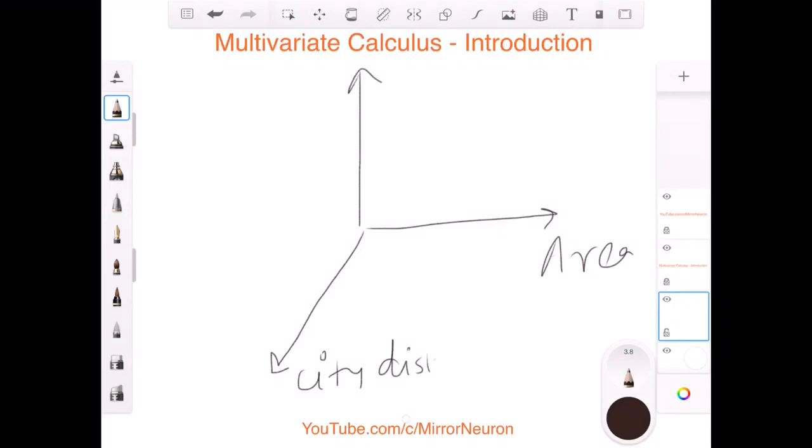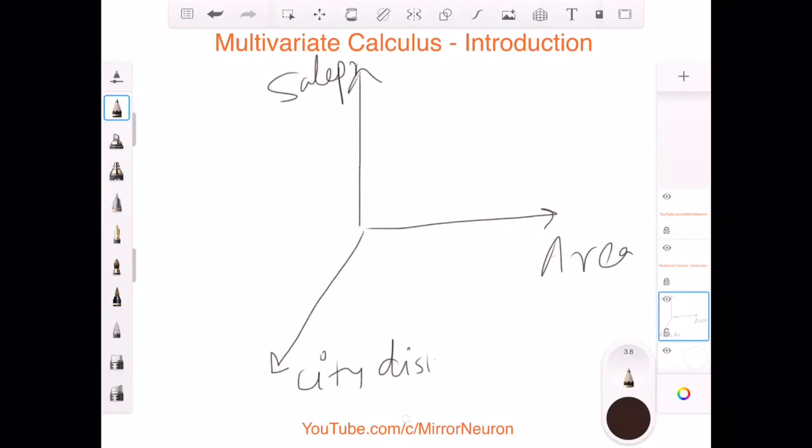And this is my sale price. So here we are taking two variables instead of a single variable, area. So area is in square feet, city distance probably is in kilometers. So of course, that is a different story how we are going to use that information. But for the time being, just keep in mind that we are dealing with two variables instead of one.